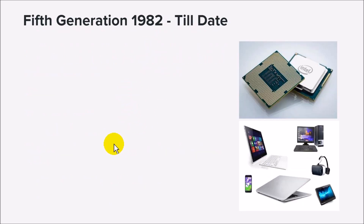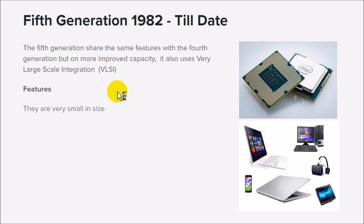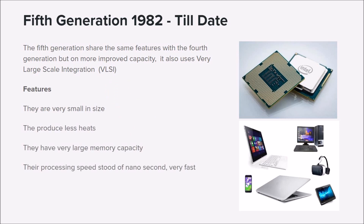From 1982 to the current date, the fifth generation uses technology known as Very Large Scale Integration — similar to the fourth generation but more improved. This is where we started having laptops, desktop computers, and handheld computers. Fifth generation computers are very small, produce less heat, have larger memory capacity, and are very fast. They also became affordable, so households can now afford a personal computer.